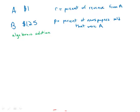So we have A, and we have B. P percent of the newspapers sold were A. That means 100 minus P percent were B.